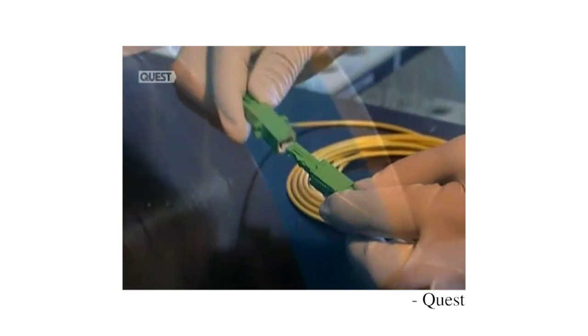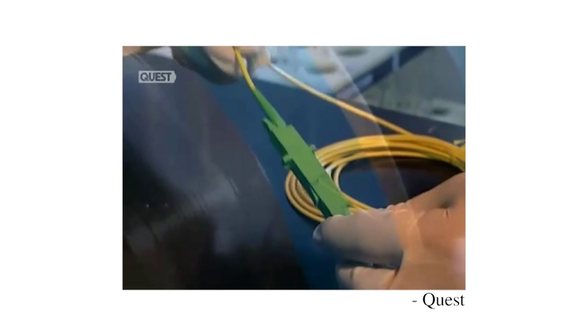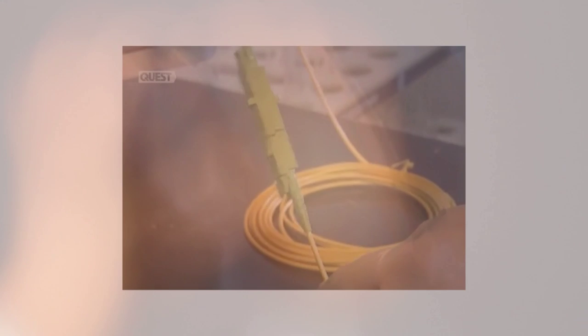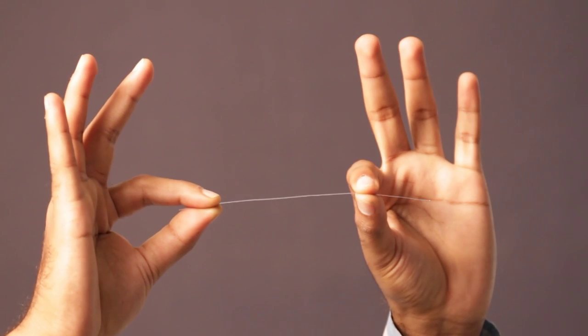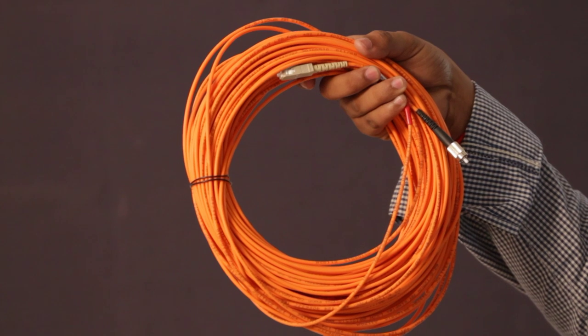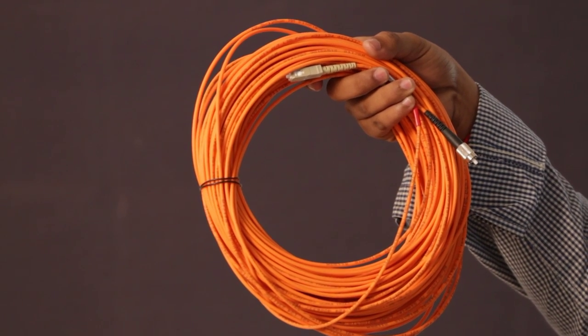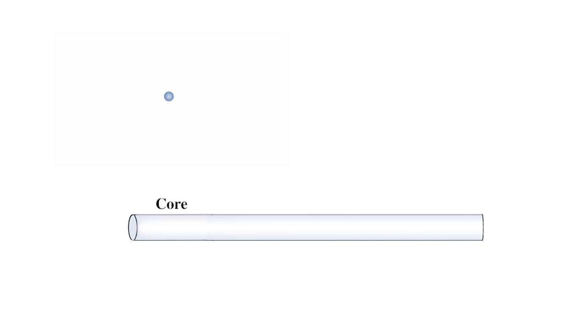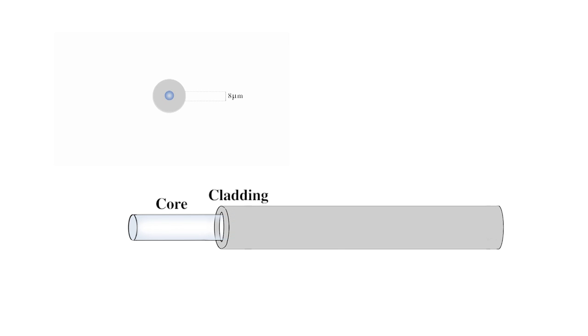Specially designed glass fiber, which is about as thin as a human hair, is packaged to form a rugged cable. Typically, an 8 micrometer core glass fiber is given a cladding of about 125 micrometer diameter.